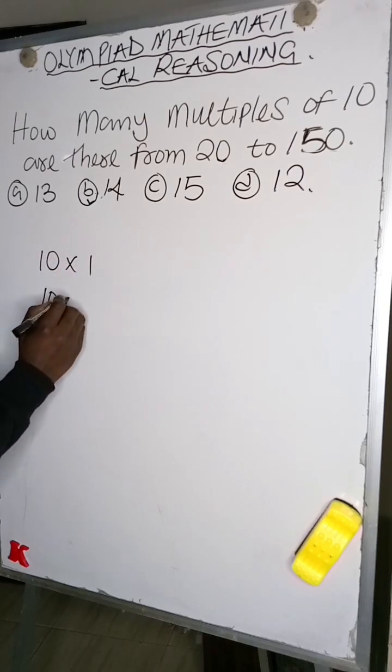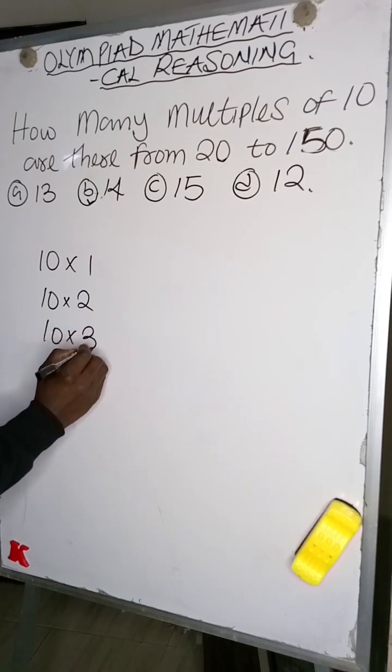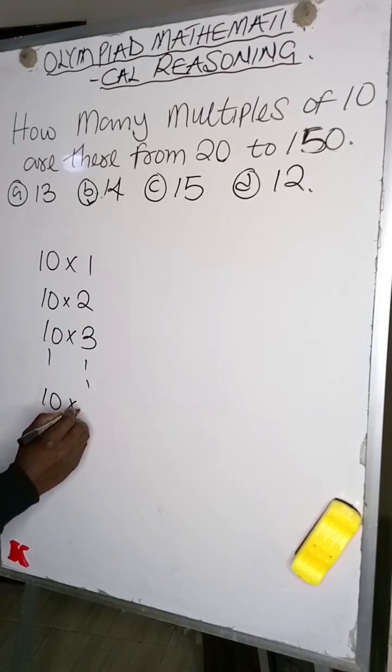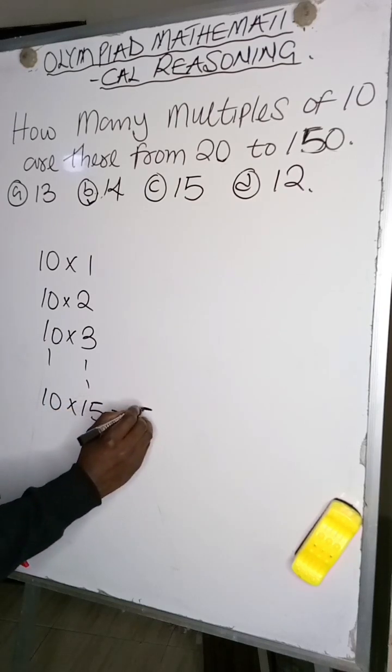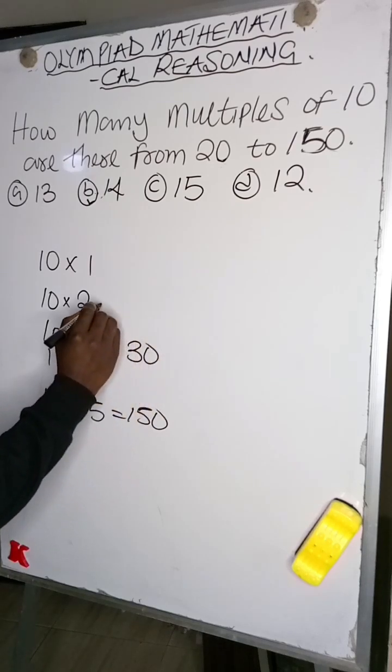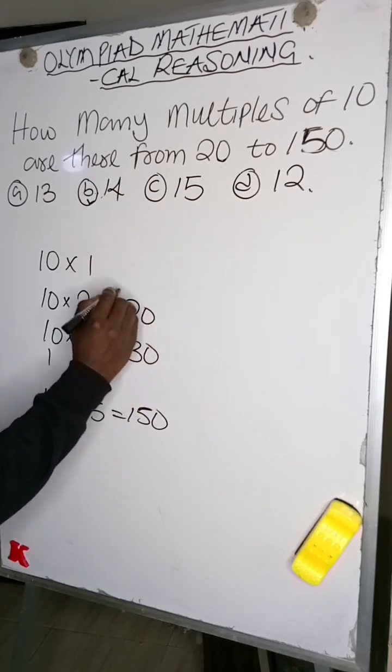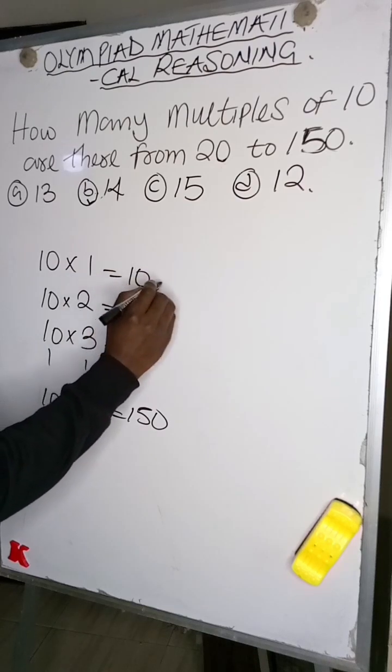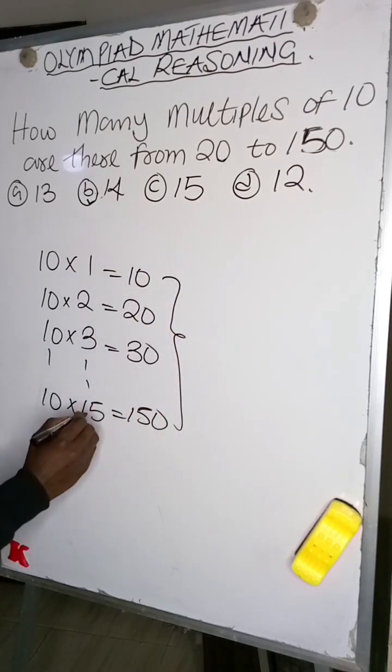If we multiply 10 by 1, 10 by 2, 10 by 3, down to 10 by 15, we're going to get 150, we're going to get 30, 20, and then 10 respectively. So 15...